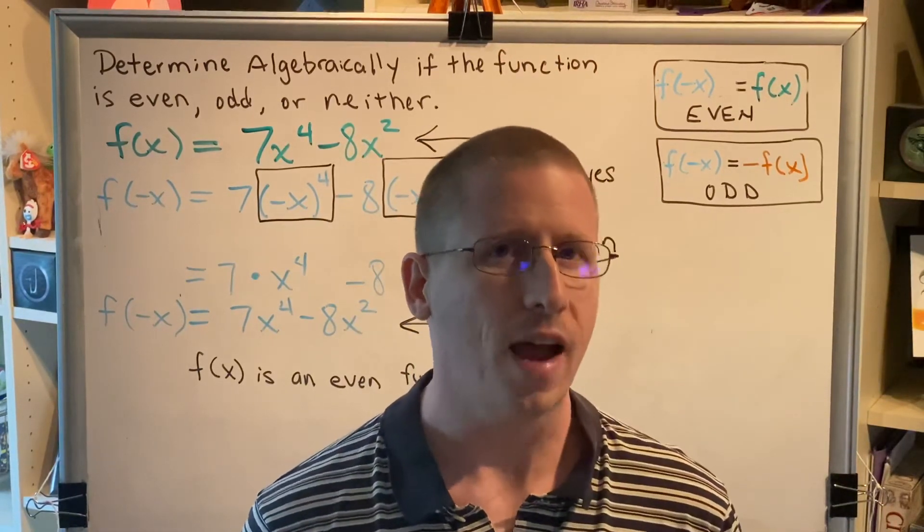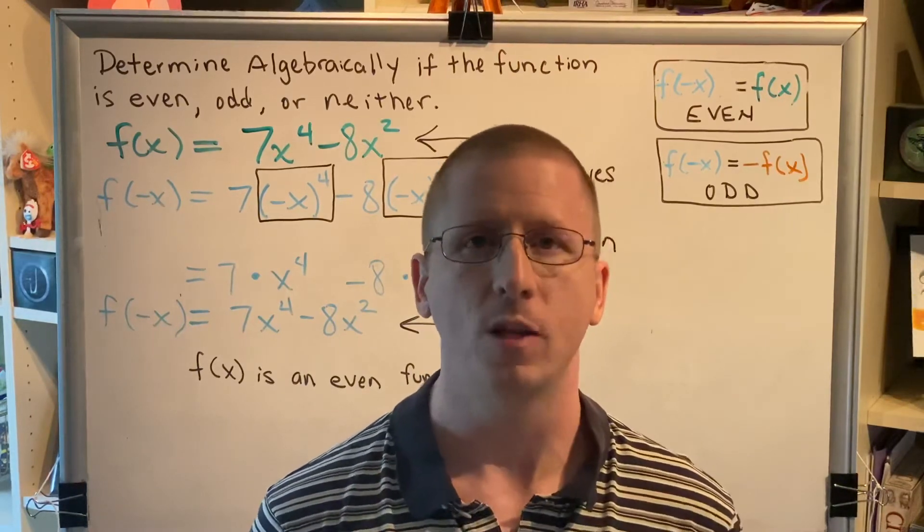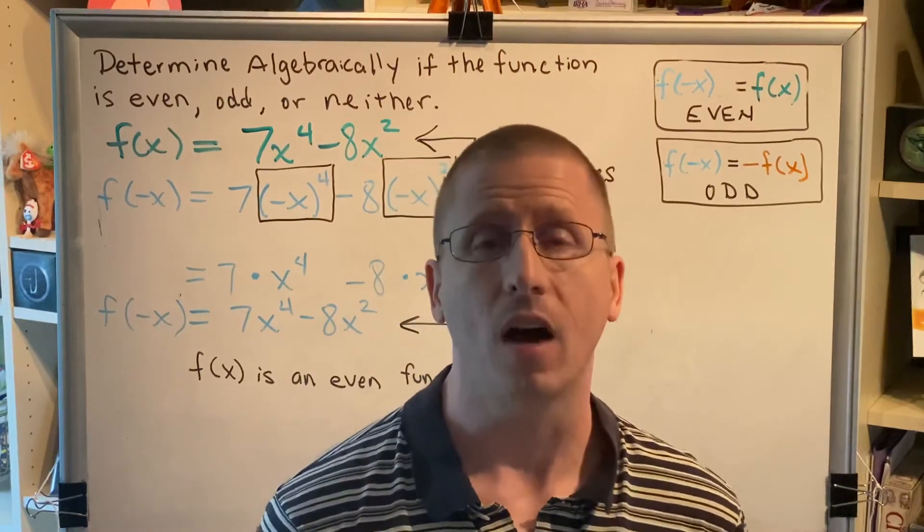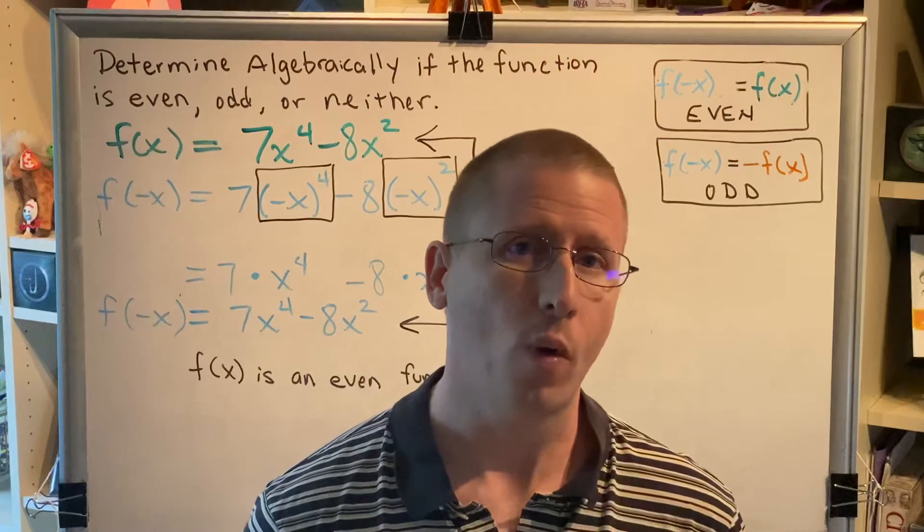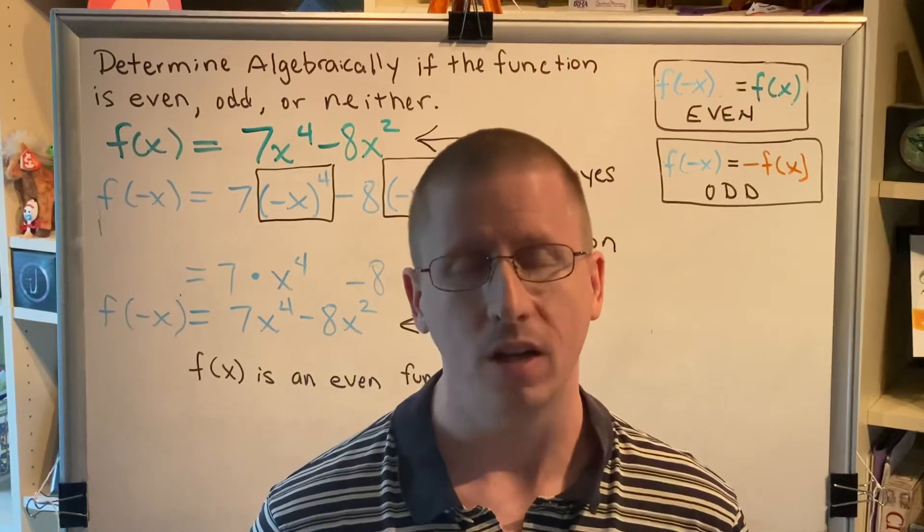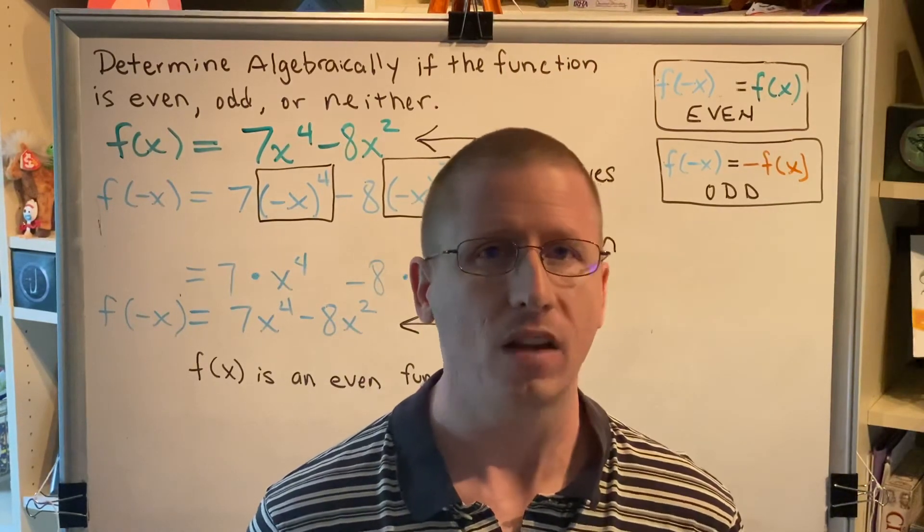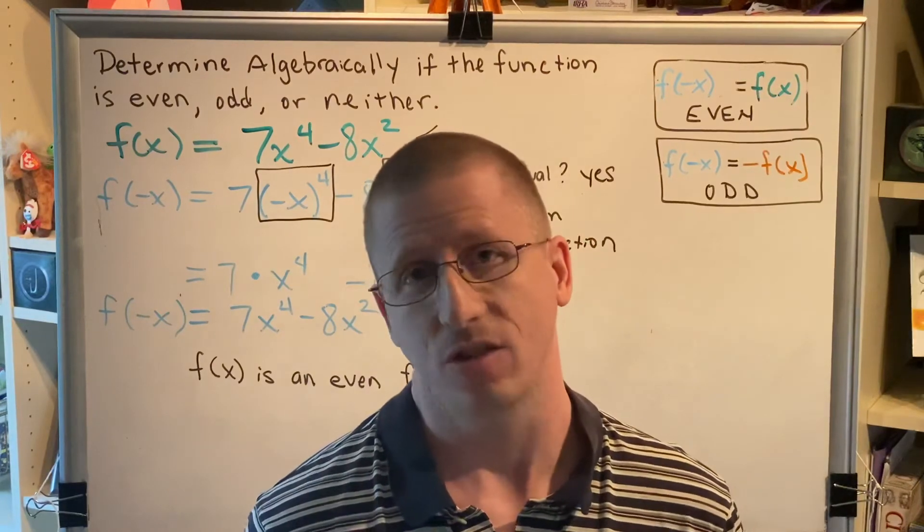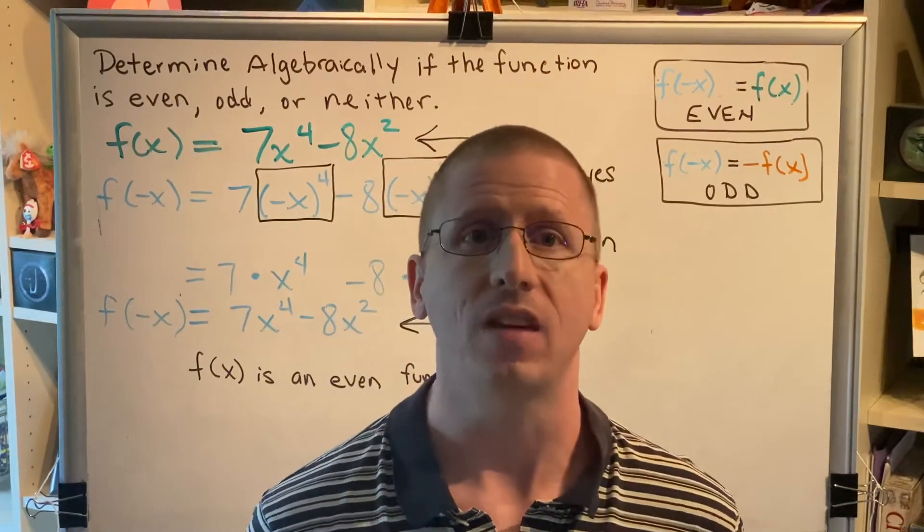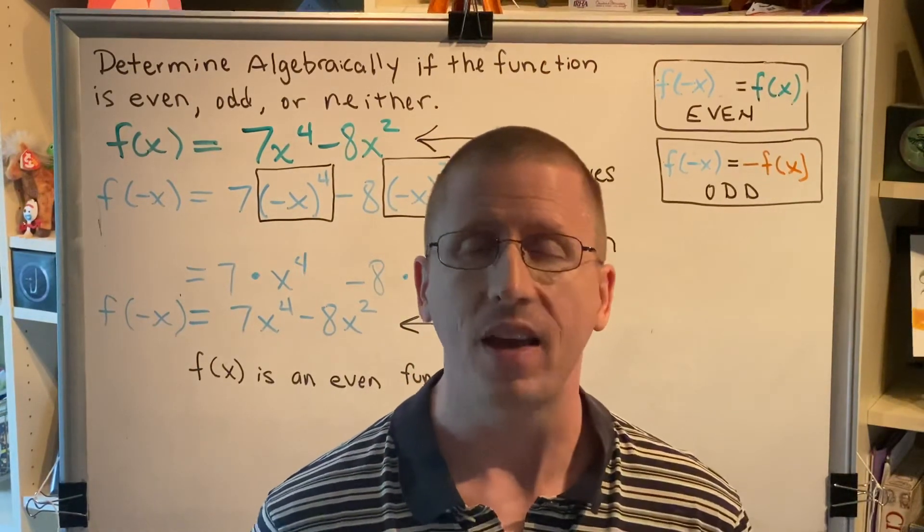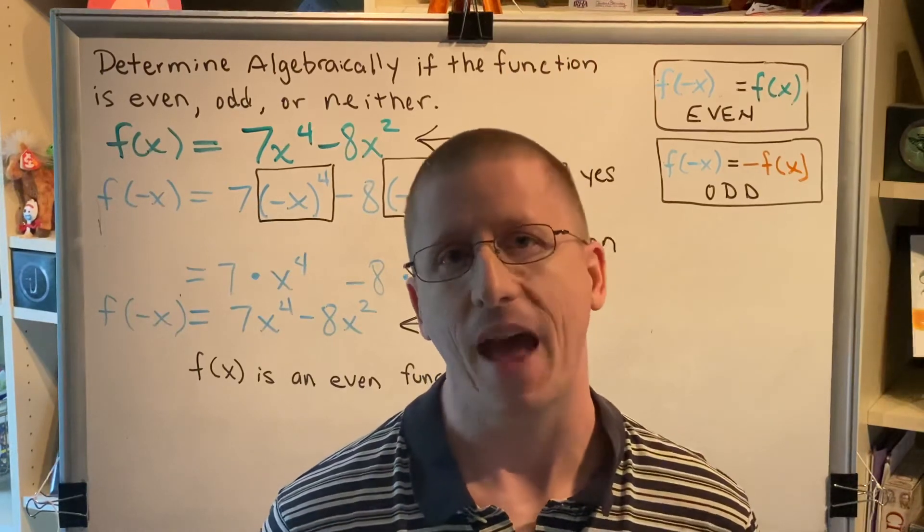It turns out there is exactly one function that is both even and odd. And it is the function whose points consist exclusively of points that sit directly on top of the x-axis. For example, f of x equals 0.